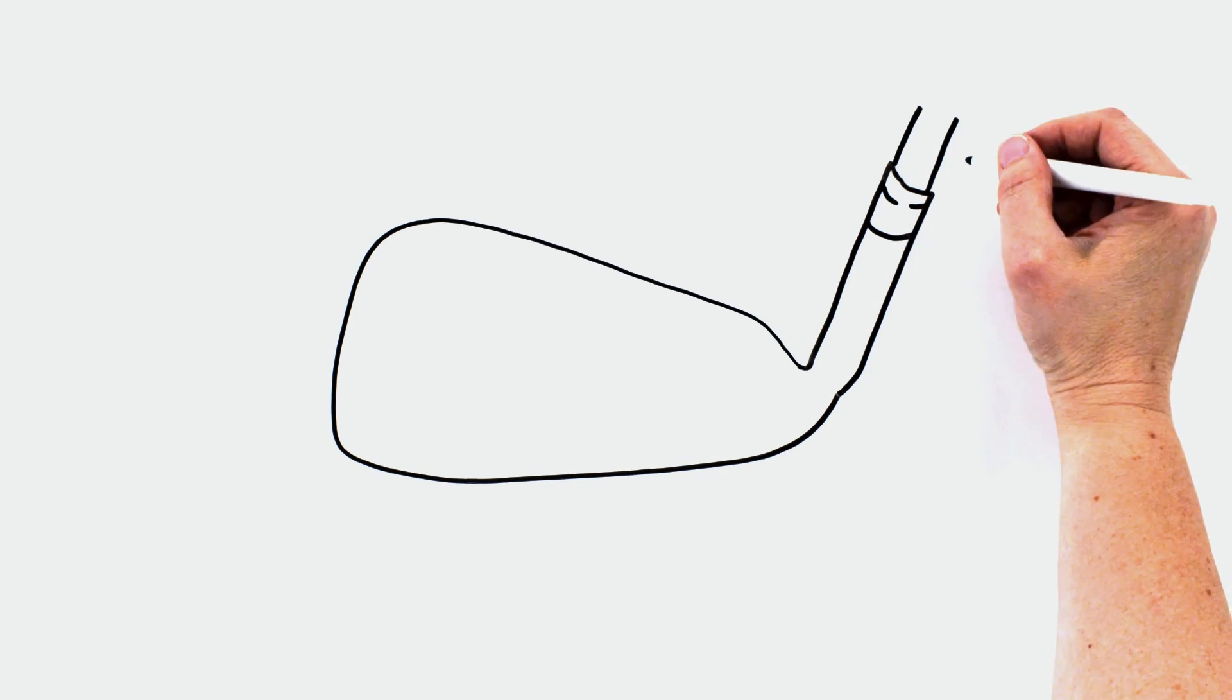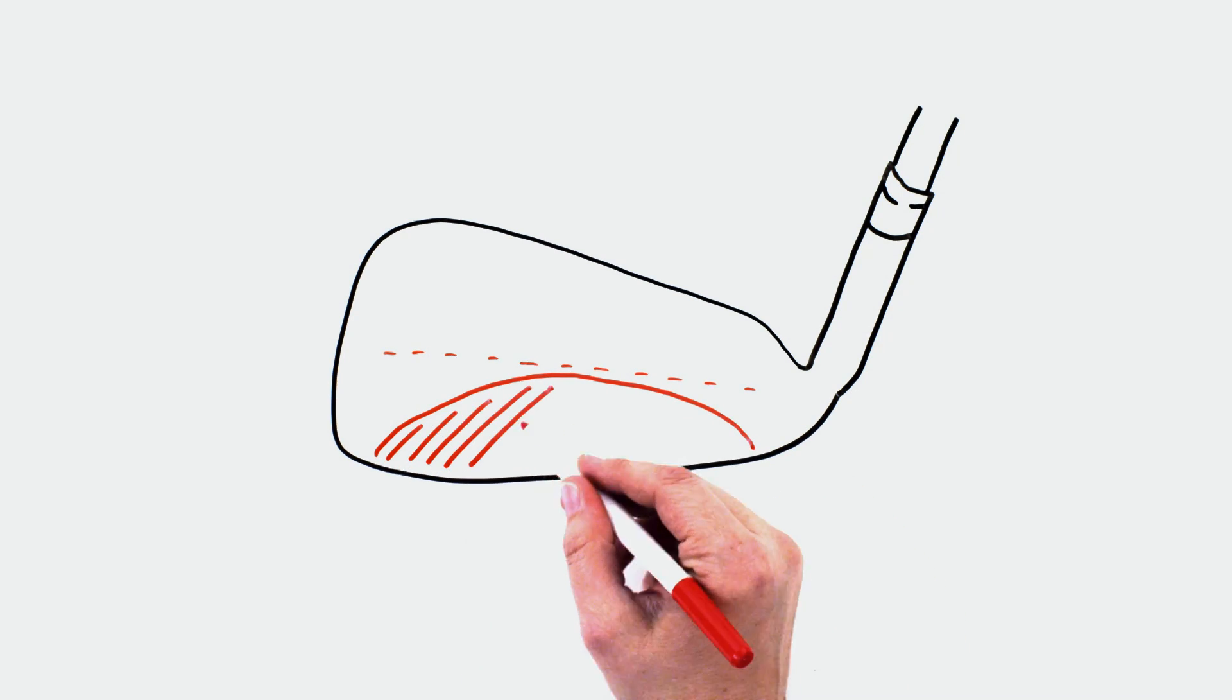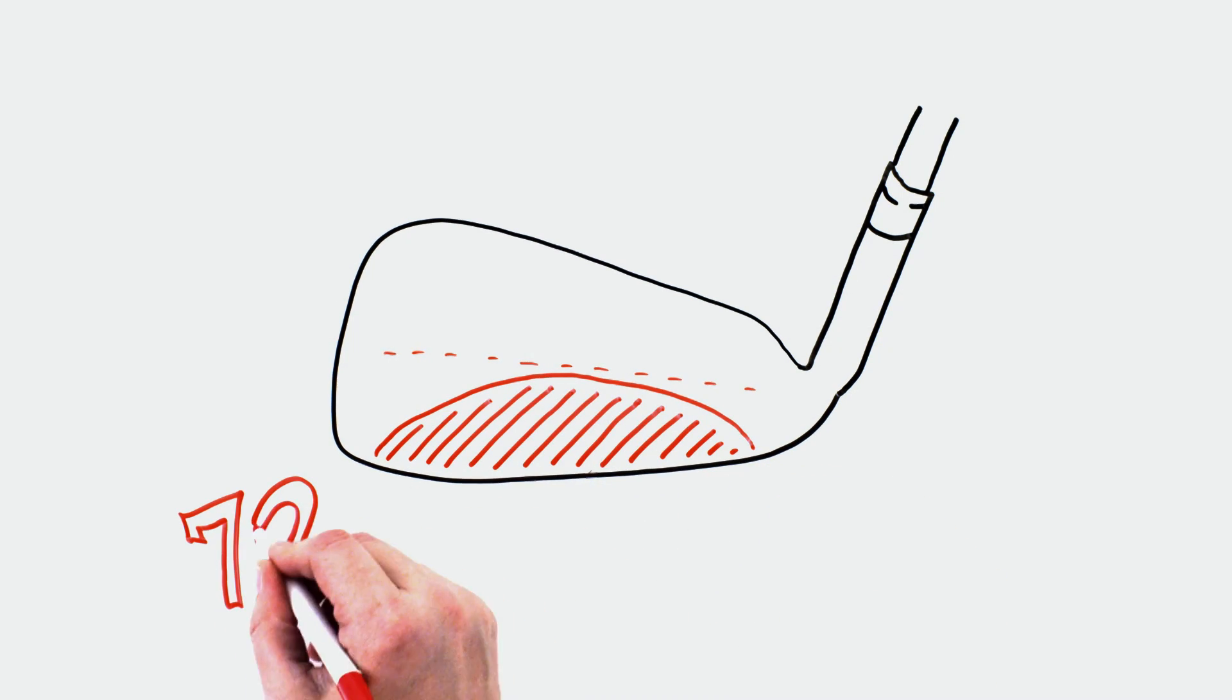And the speed pocket delivers that speed all over the face, even down low. And that's huge because the average player makes impact low on the face 72% of the time. That is 7 out of 10 shots, people.